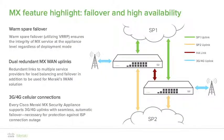MX feature highlight: failover and high availability. Mission-critical networks can't afford to be down. At Meraki, we've built multiple layers of redundancy into our MX product line to protect against WAN failure, power interruption, and appliance faults. In the event of an appliance failure, the Warm Spare feature will ensure that your site stays online automatically. Because configurations are synchronized from the cloud, all your firewall rules, DHCP configuration and leases, VPNs, and advanced security services will continue to operate off the backup device. Virtual Router Redundancy Protocol (VRRP) ensures minimal interruption to client devices as the switchover happens. Dual redundant WAN connections protect your connectivity via multiple service providers, with basic failover or concurrent load balancing.